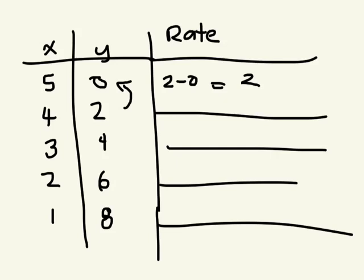And what is the x value changing by? It's decreasing by 1. Right. So we would actually do 4 take away 5, which is negative 1.